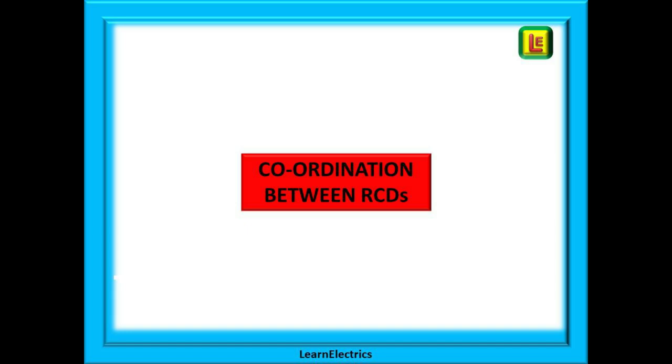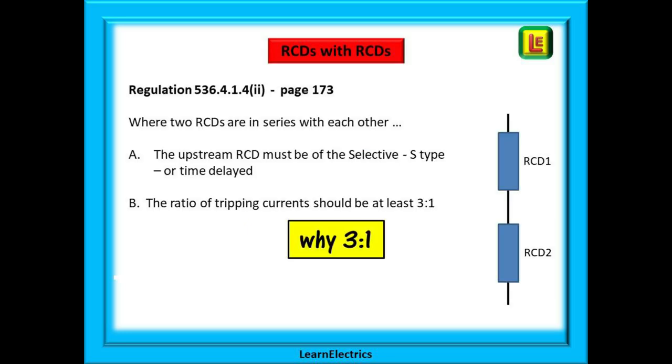We can look now at simple coordination between RCDs. Regulation 536.4.1.4 part 2 on page 173 of the wiring regulations tells us that where two RCDs are in series with each other then the upstream RCD must be of the selective S type or time delayed type and that the ratio of the tripping current of the two RCDs should be at least 3 to 1.